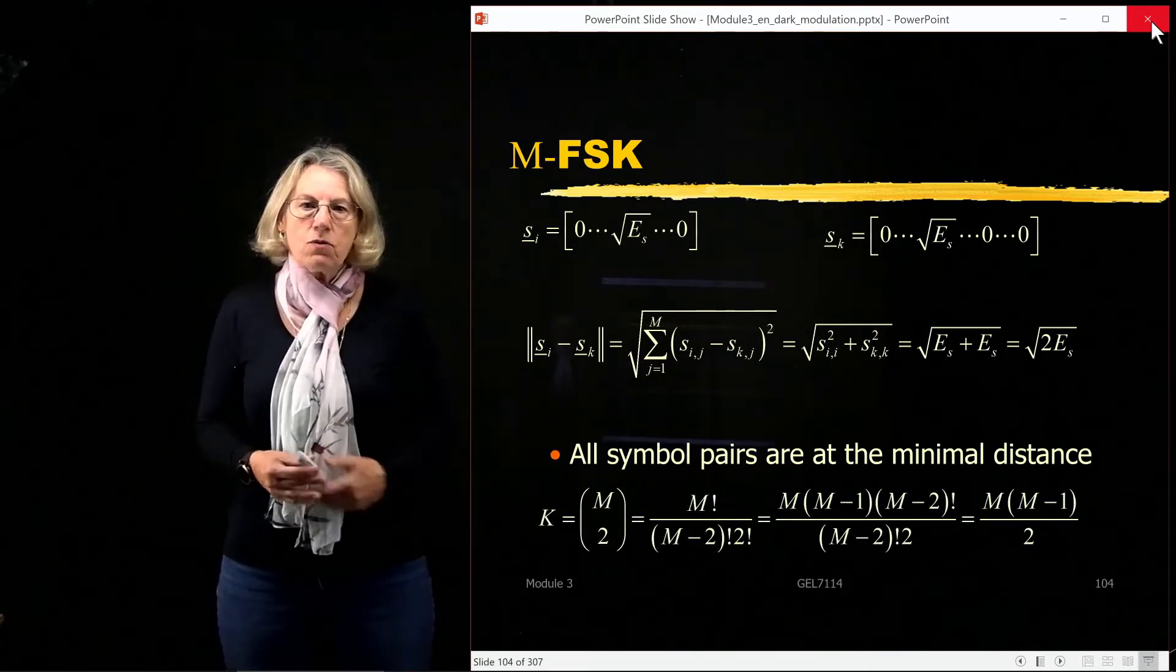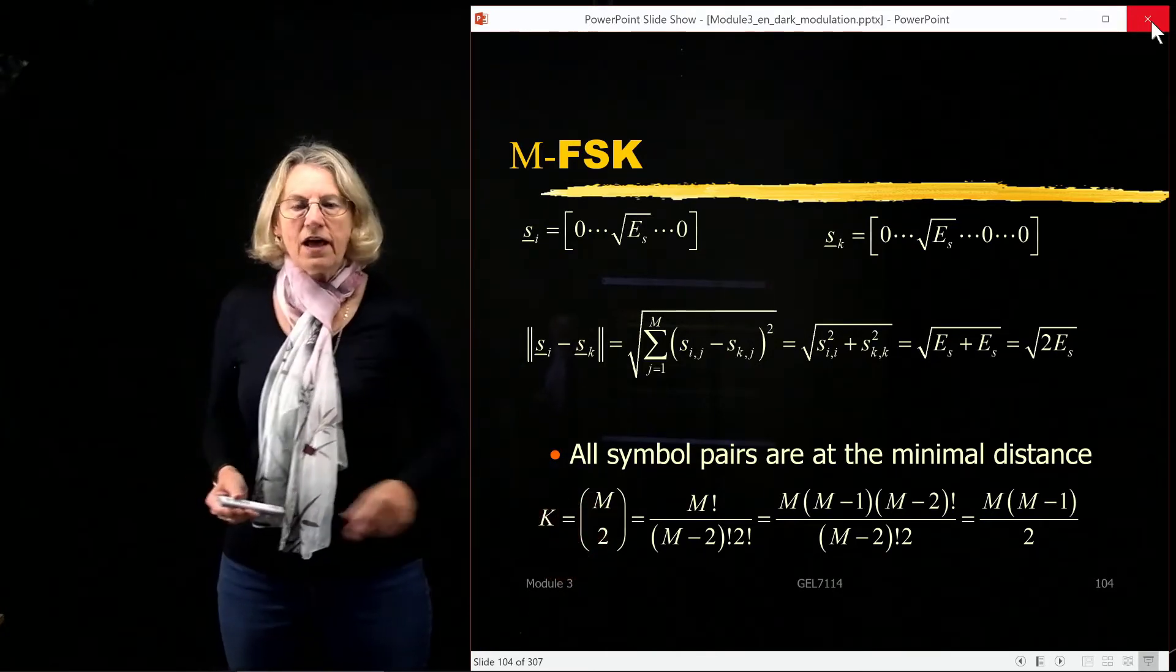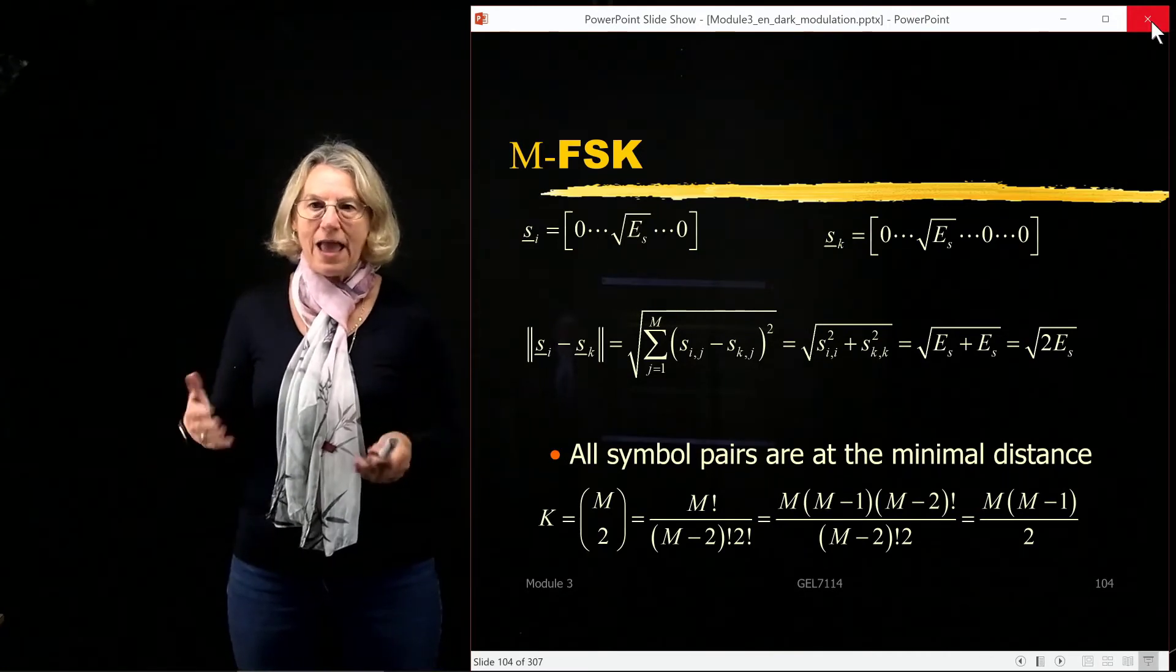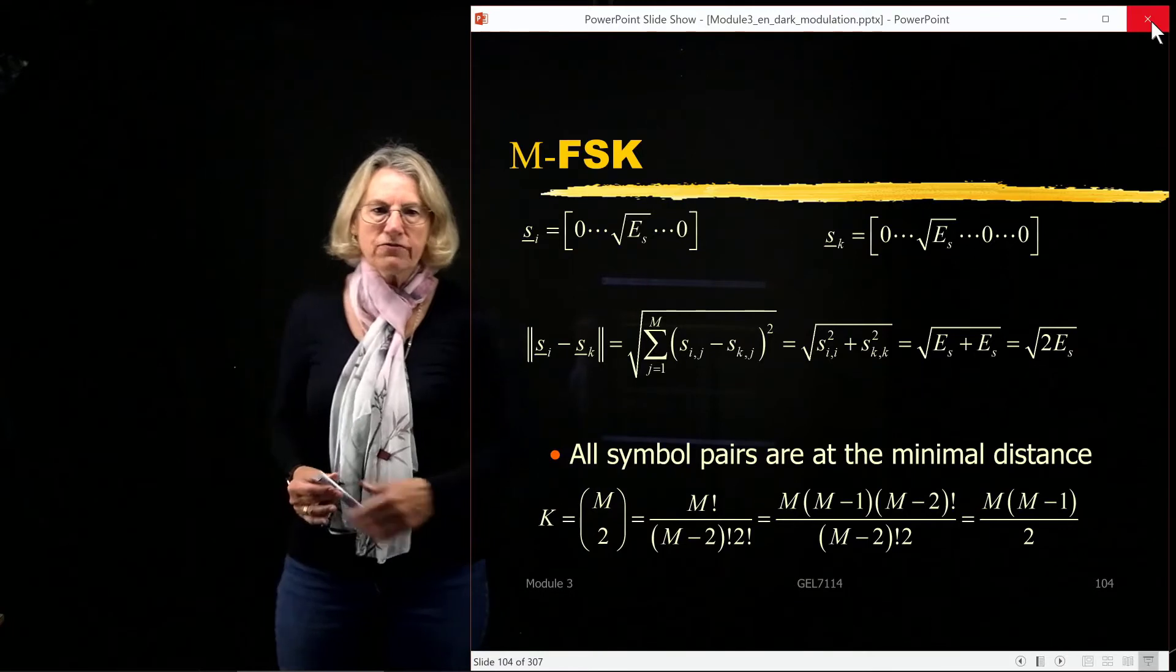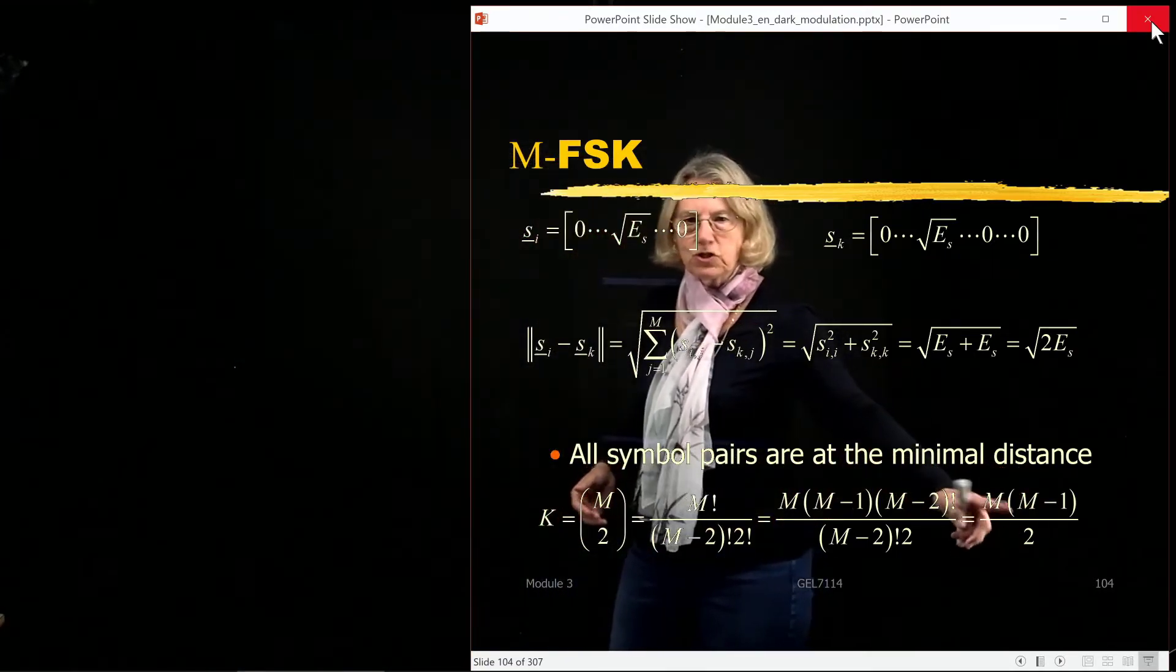How many pairs are there? And so given that there are m and we're looking for any pairs for two, the number of these pairs is the binomial coefficient m choose two. So m factorial over m minus two factorial, two factorial, and that simplifies to m times m minus one over two.